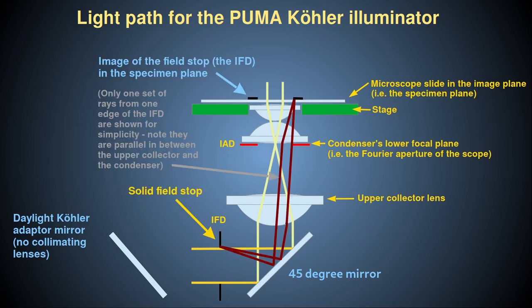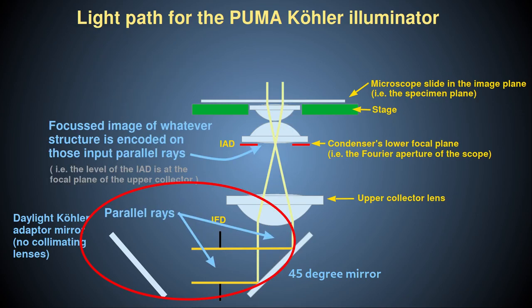The first effect, imaging the field stop, will occur regardless of the nature of the input light. The second effect, however, requires that the input light be collimated and encode an image of an extended light source. This image, when focused by the upper collector lens, will be positioned at, and ideally fill, the lower focal plane of the condenser for maximum numerical aperture illumination.